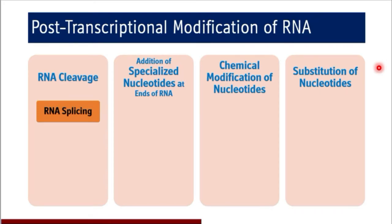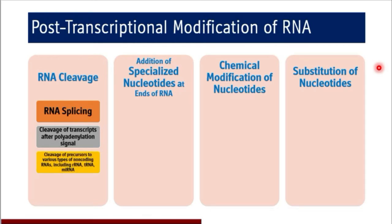Coming to RNA cleavage, under RNA cleavage you will see the mechanisms like RNA splicing — that is intron splicing — we will discuss that in detail. Next is cleavage of transcripts after polyadenylation signal. Cleavage of precursors to various types of non-coding RNA including rRNA, tRNA and miRNA. Cleavage of large mutagenic mitochondrial RNA transcripts also comes under RNA cleavage type of post-transcriptional modifications of RNA.